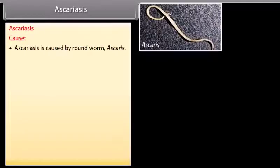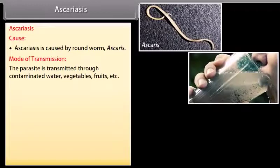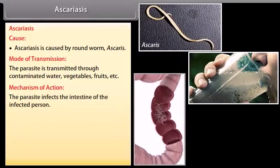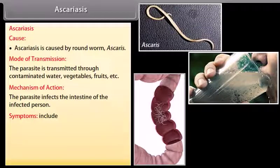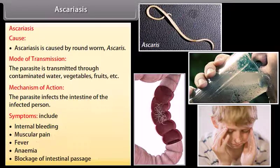Ascariasis is caused by the roundworm Ascaris. The parasite is transmitted through contaminated water, vegetables, fruits, etc. It infects the intestine of the infected person. Symptoms include internal bleeding, muscular pain, fever, anemia, and blockage of the intestinal passage.